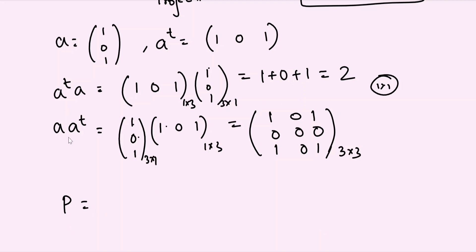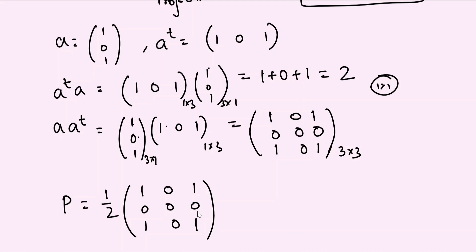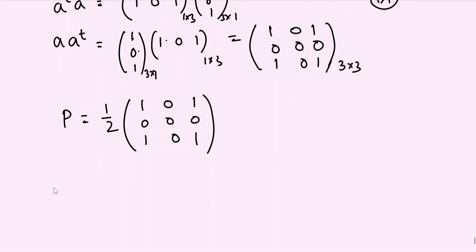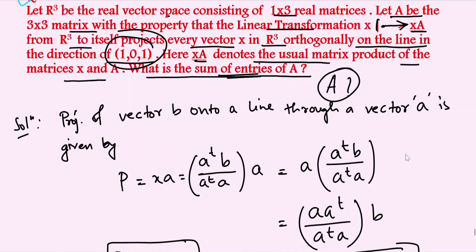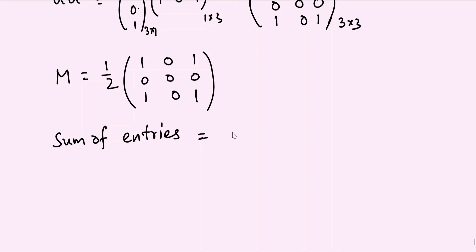Therefore the projection matrix M = aaᵀ/(aᵀa) = (1/2) · [[1,0,1],[0,0,0],[1,0,1]]. The sum of all entries equals (1/2) × (1+0+1+0+0+0+1+0+1) = (1/2) × 4 = 2. So the answer is 2.